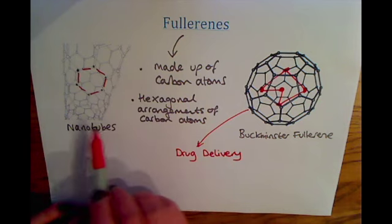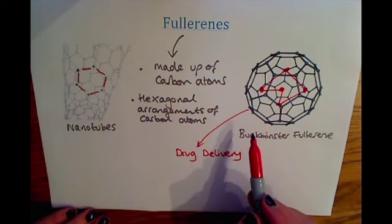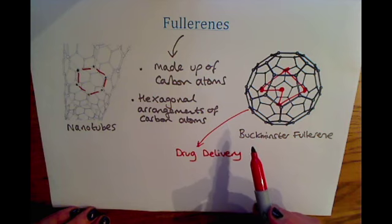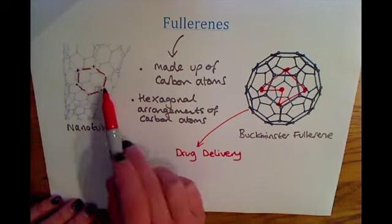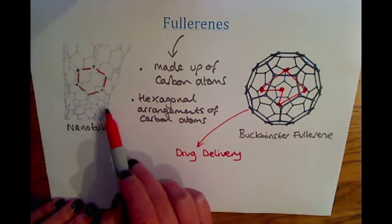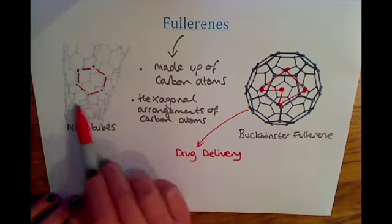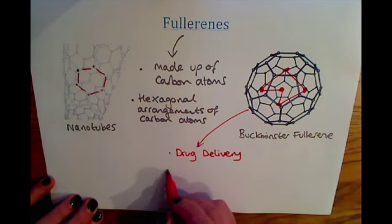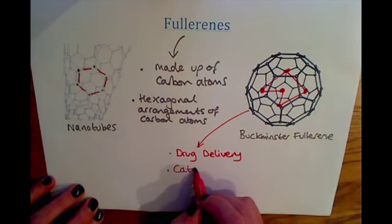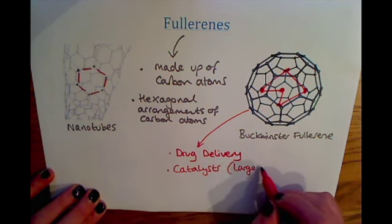Because of their large surface area to volume ratios, fullerenes can also be used as catalysts. Catalysts speed up a reaction without being used up in the reaction themselves — they provide a surface on which reactants can meet and form products. The large surface area of nanotubes and Buckminster fullerenes makes them useful catalysts.